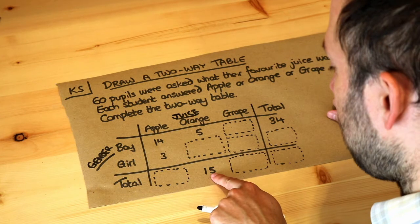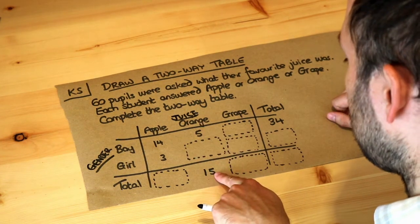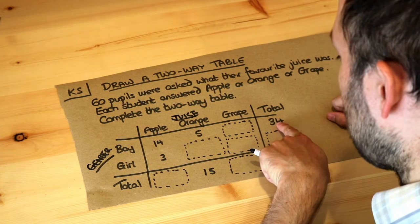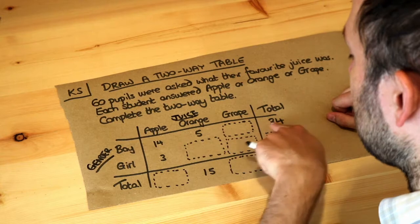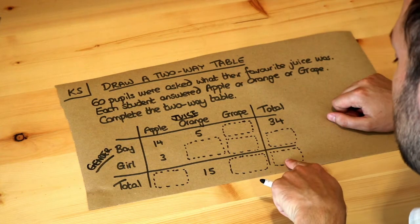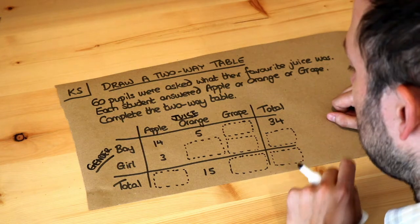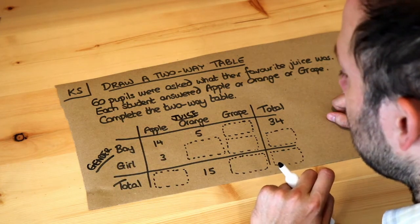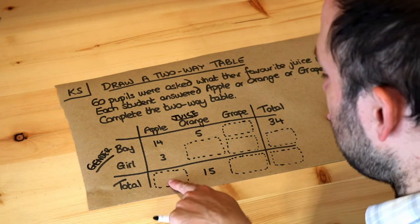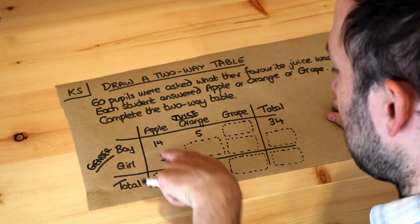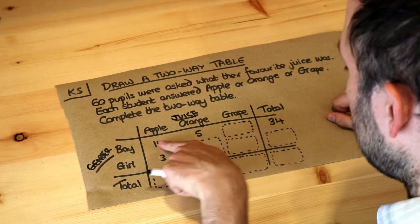For example, this 15 here represents the total of people who like orange juice. Similarly, this 34 here represents the total of the boy row — so the total number of boys is 34 — and the number down here is the total of everyone: all people who like any flavour of juice, whether they're a boy or a girl. The total is just the sum of the things in each column, or the sum of the things in each row.